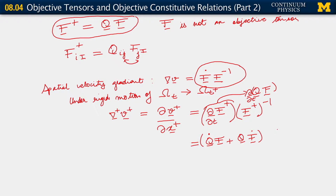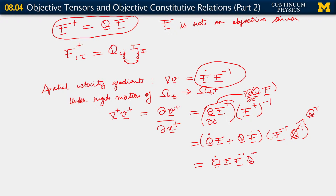For the second parentheses, it's just the inverse of qF. Remember, the inverse of a product is the product of the inverses with the order flipped. So we get F-inverse times q-inverse. But since q is orthogonal, q-inverse equals q-transpose. Putting it all together, we see that for the first term we have q-dot F F-inverse q-transpose, plus q F-dot F-inverse q-transpose.